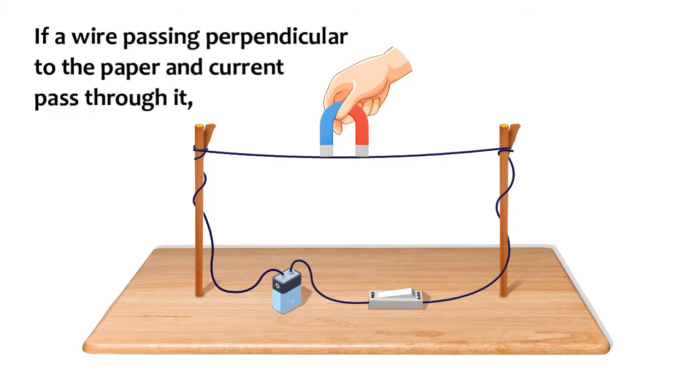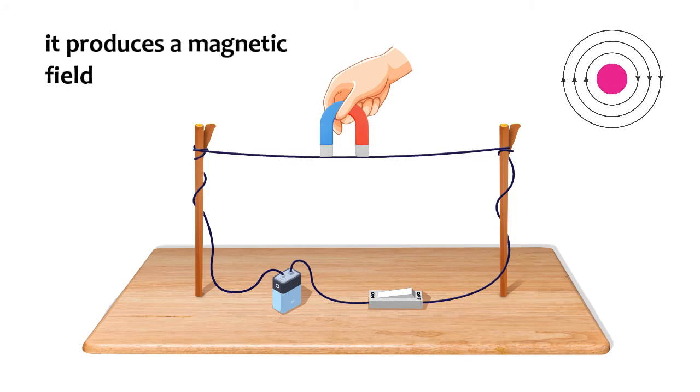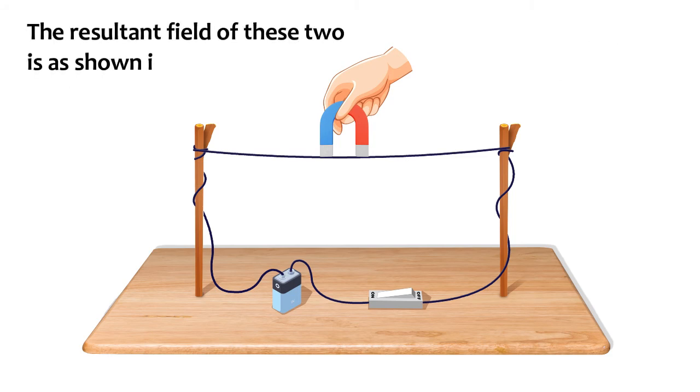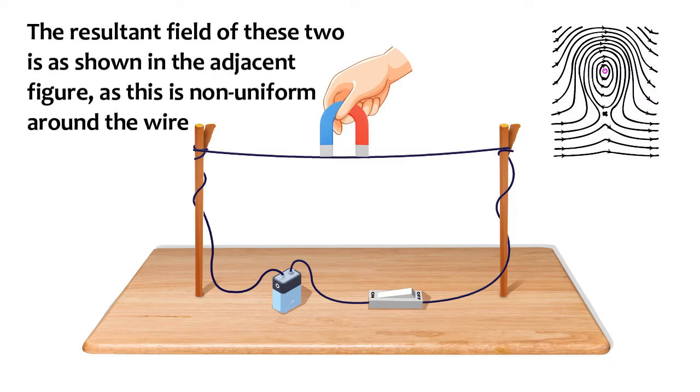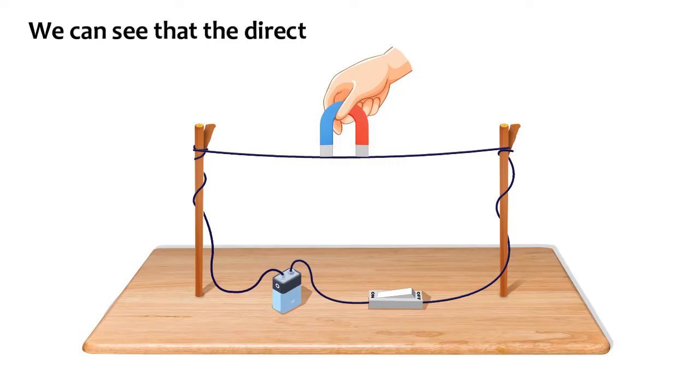If a wire passes perpendicular to the paper and current passes through it, it produces a magnetic field. The resultant field of these two is shown in the adjacent figure as a non-uniform field around the wire.